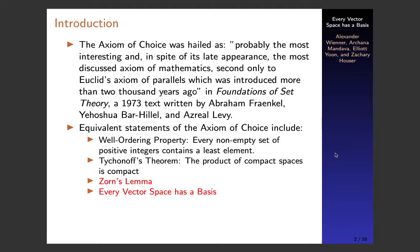The Axiom of Choice has been proven to lead to paradoxical results and was initially received with great skepticism. It also came with some equivalent statements, some of which include the well-ordering property — that any set of natural numbers contains a least element — Tychonoff's theorem, which states that the product of compact spaces is compact and is used in topology, Zorn's Lemma, and the statement that every vector space has a basis. The last two statements we'll discuss in more detail soon.